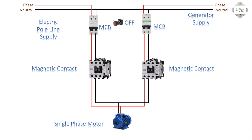Off switch, PS switch, GS switch. PS means electric pole switch on button, and GS means generator switch button.